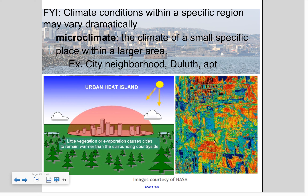This infrared image of a city at night shows heat being radiated off the concrete, illustrating how urban areas stay warmer than surrounding regions.